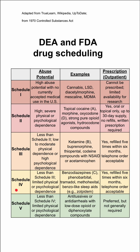Schedule 4 is less abuse potential than Schedule 3, with limited physical or psychological dependence. This includes benzodiazepines, phenobarbital, tramadol, methohexital, and benzo-like sleep aids like zolpidem.